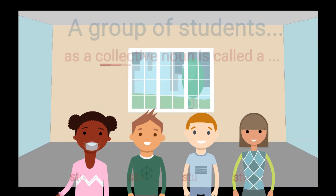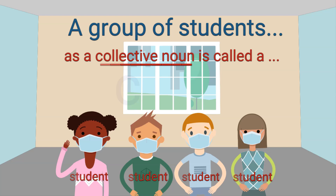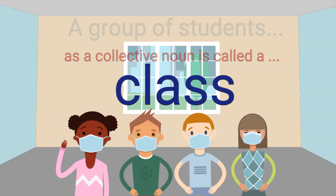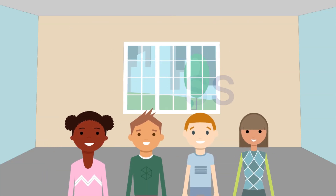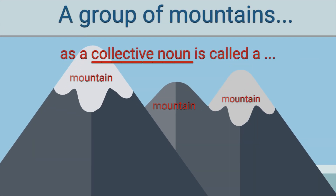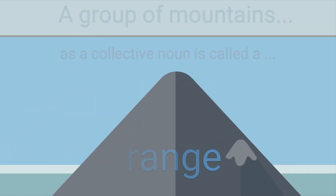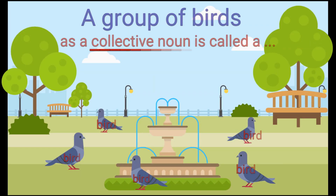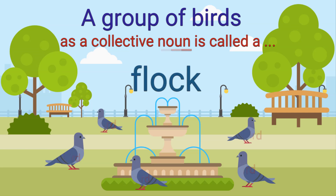Let's take a closer look. A group of students as a collective noun is called a class. A group of mountains as a collective noun is called a range. A group of birds as a collective noun is called a flock.